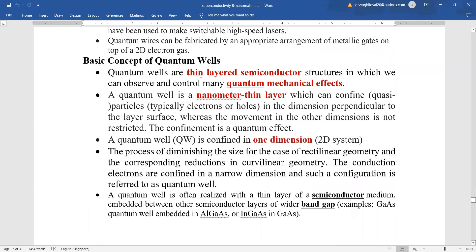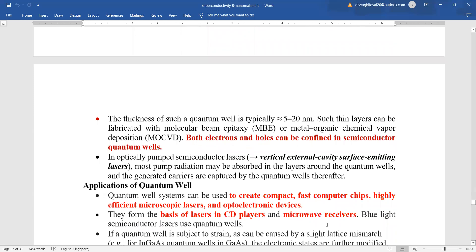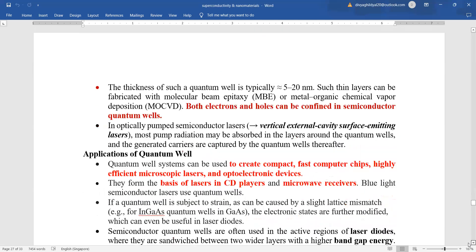Basic concept of quantum wells. Quantum wells are thin layered semiconductor structures in which we can observe and control many quantum mechanical effects. A quantum well is a nanometer thin layer which can confine particles in the dimension perpendicular to the layer surface, whereas the movement in the other dimensions is not restricted. A quantum well is confined in one dimension. The process of diminishing the size for the case of rectilinear geometry and the corresponding reductions in curvilinear geometry. So, quantum well is realized with a thin layer of semiconductor medium embedded between other semiconductor layers with wider band gap. Both electrons and holes can be confined in the semiconductor.